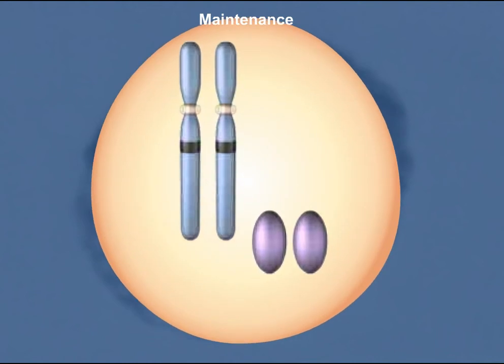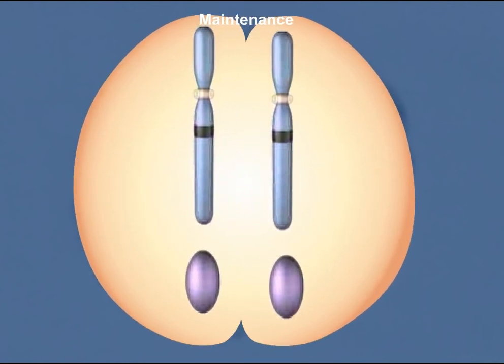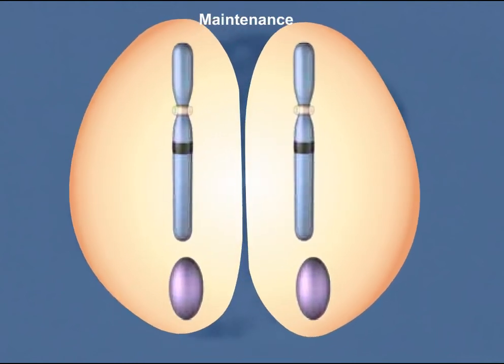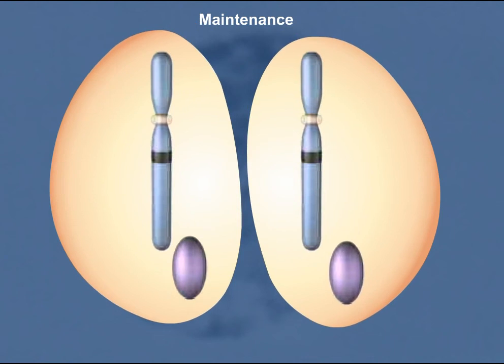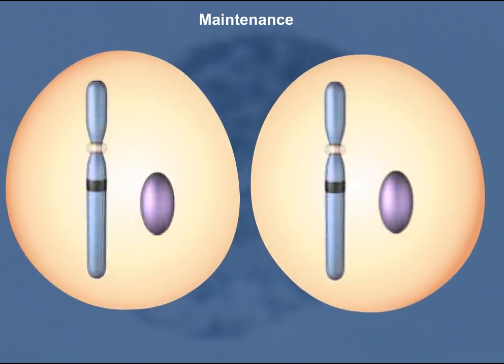Thus, once an embryonic cell undergoes X-inactivation, all cells that derive from it will have the same X chromosome inactivated.